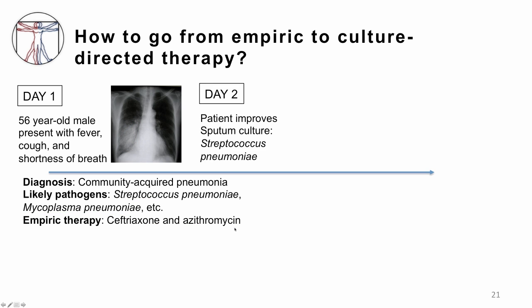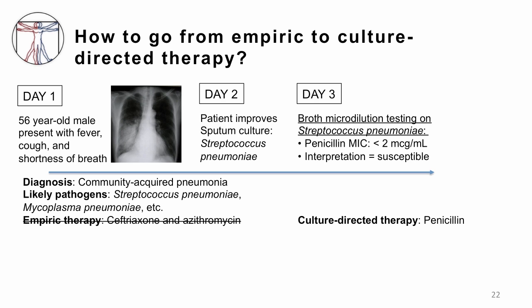On the second day of care, the patient is getting better. You picked the right empiric regimen, and the culture reveals Streptococcus pneumoniae. Given that information, you know that you can start changing the antibiotic regimen — there's no reason you still need the azithromycin. On day three, you get susceptibility testing and see that the penicillin MIC is low, it's susceptible, and you can actually change to a more narrow-spectrum antibiotic like penicillin, which is very specific against strep and doesn't cover a lot of gram negatives. You can focus on using that antibiotic alone. I hope this has been helpful in explaining how we use empiric therapy and move to culture-directed therapy.